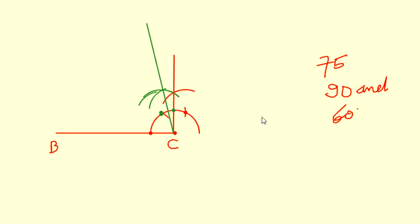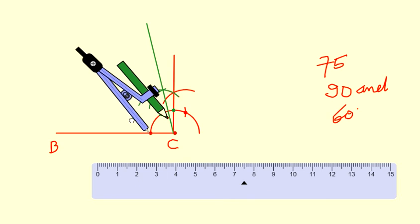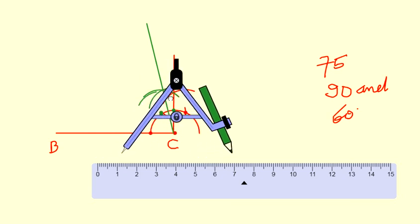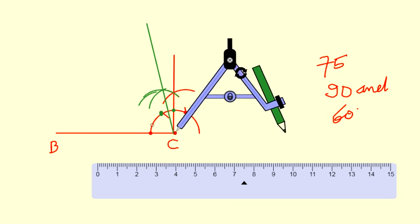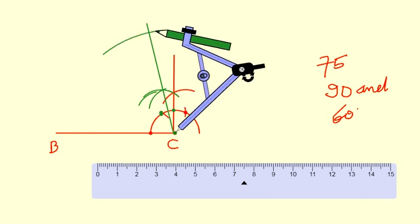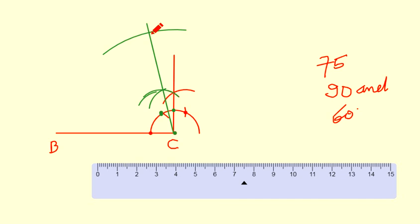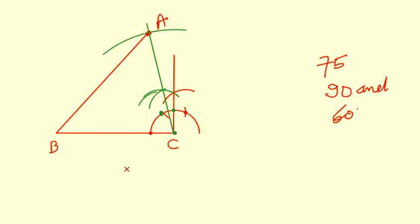Now, line segments BC and AC are given. AC is 5.7 centimetres. Measure 5.7 on the compass, take C as centre, and cut an arc along the 75-degree line. This gives point A. Now join B and A. This is your required construction of triangle ABC.